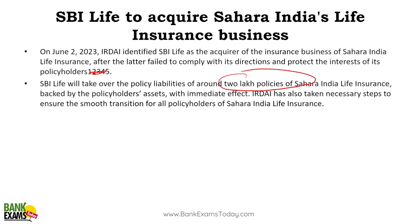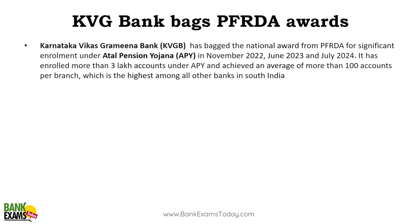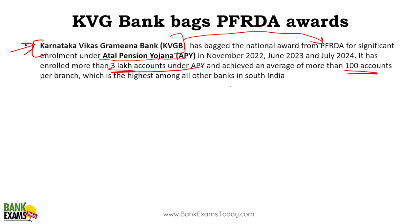Karnataka Vikas Grameen Bank (KVG Bank) bagged the PFRDA award. They received the national award from PFRDA for enrolling more than 3 lakh accounts under the Atal Pension Yojana (APY) and achieving an average of more than 100 accounts per branch — which is really amazing. That is why Karnataka Vikas Grameen Bank received the award from PFRDA.